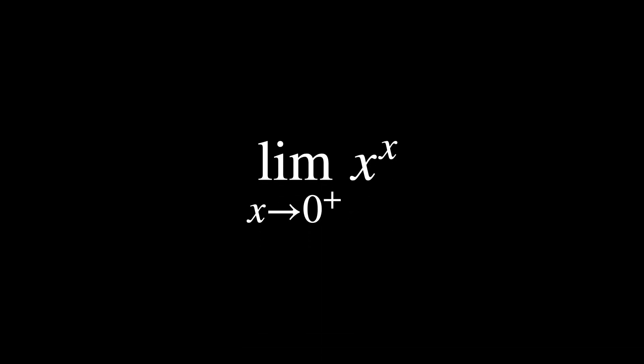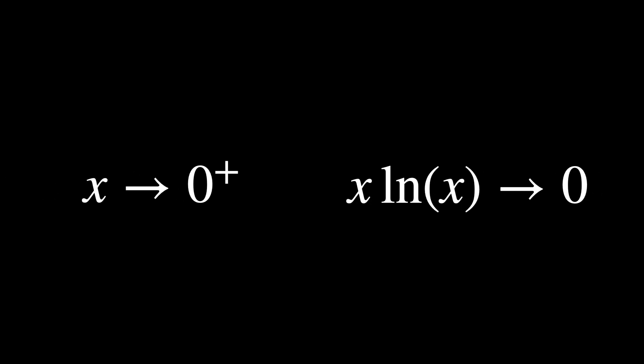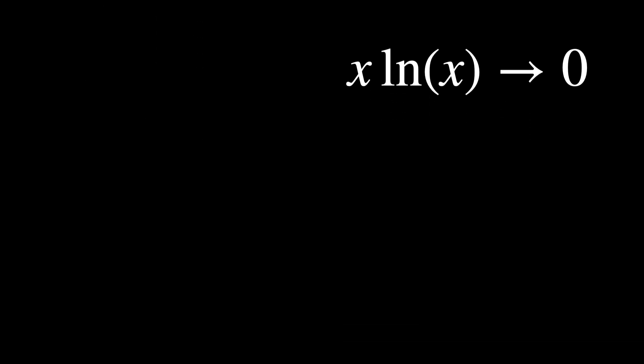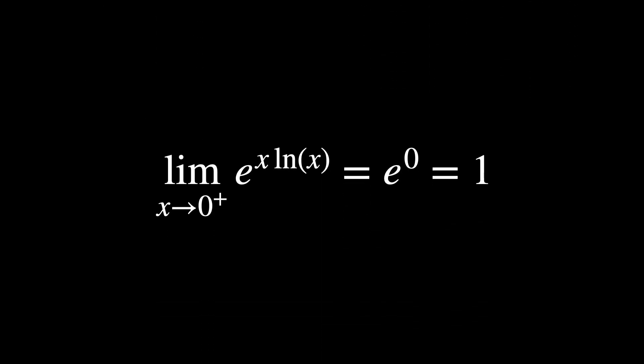Take this limit. It evaluates to x to the power of x equals e to the power of x times the ln of x. As x goes to 0 from right to left, x times ln of x goes to 0 because ln of x approaches minus infinity slower than x approaches 0, which leads us to the fact that the limit of e to the power of x times ln of x, as x goes to 0 from right to left, is e to the power of 0, or what's the same, 1.